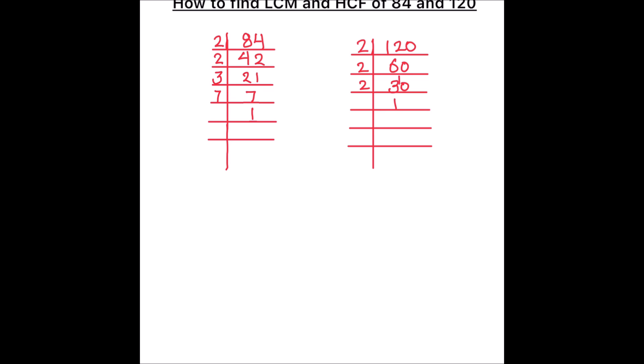This becomes 10, 2 times 5 is 10. Now we use 3 to divide 15. 3 times 5 is 15 and 5 times 1 is 5. Both numbers are fully divided and we got the factors of both numbers.